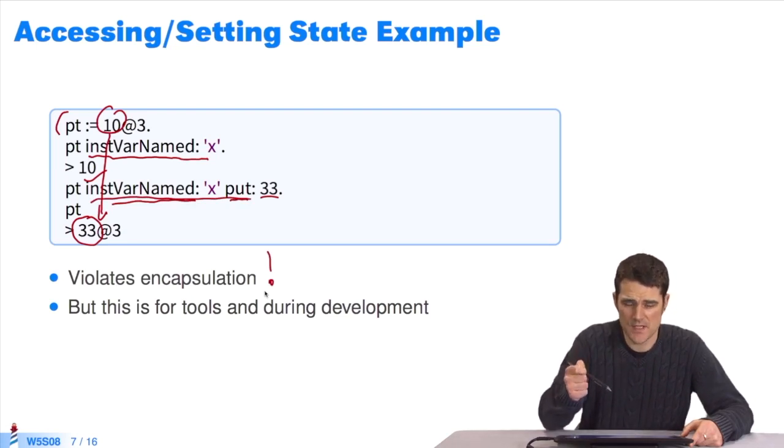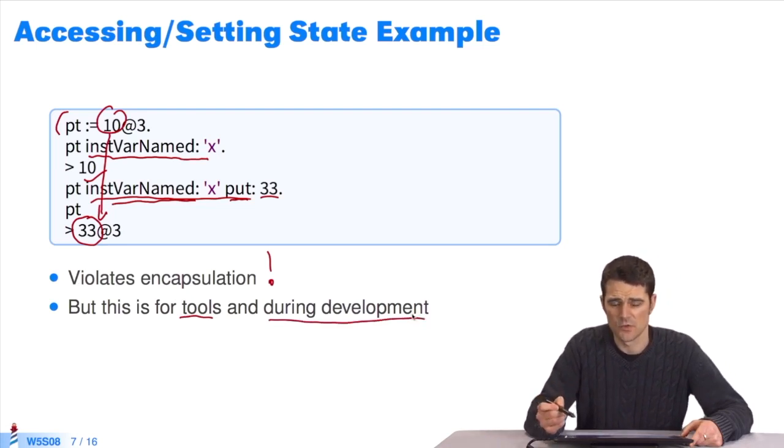An external object has modified this object without being internal. So, it violates encapsulation, but it's extremely useful when building tools and during development. It's not to be used in the normal code of an application, but it's extremely powerful for building generic tools, typically code inspectors.